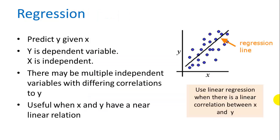Regression is basically trying to predict y given x. So if we're given an independent variable x, we're trying to predict a dependent variable y. And there may be multiple independent variables with differing correlations to y, so we want to try to choose the best variable that gives us the most accurate prediction of y.